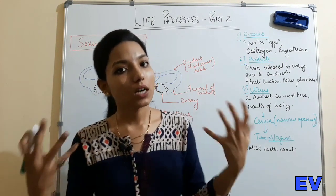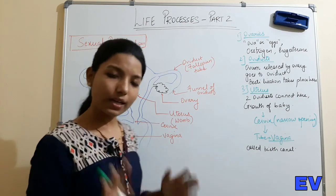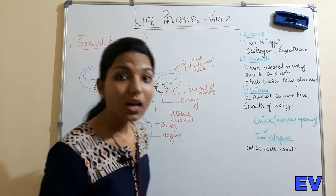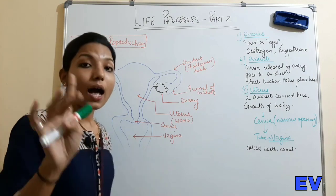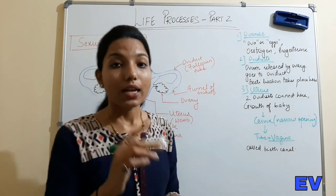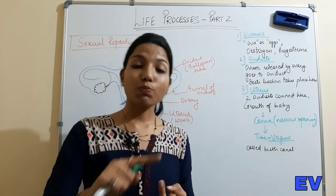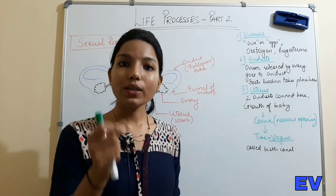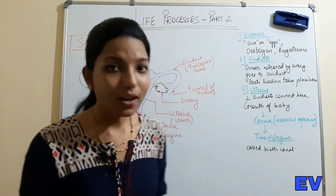After the uterus, there is a narrow opening called the cervix. Then it opens into a tube-like structure called the vagina, through which the ovum is released. The vagina is also called the birth canal because the baby's delivery also happens through the vagina. Important: in males, both sperms and urine exit through the urethra, but in females, the vagina is separate from the urethra used for urination.